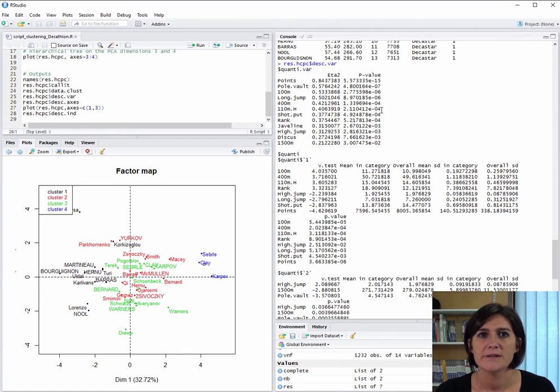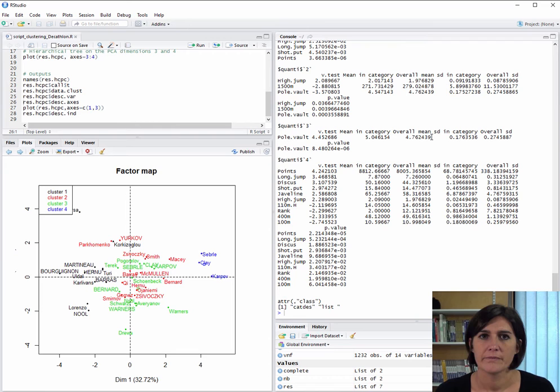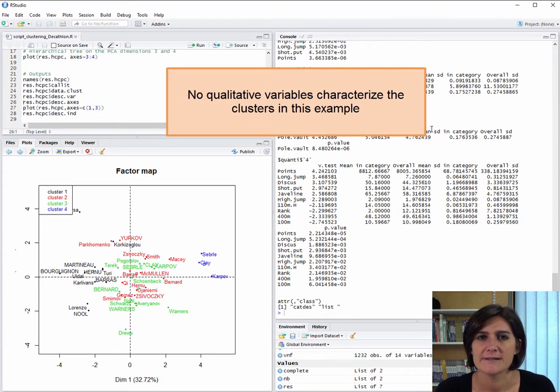And these are the individuals who have significantly less points than the others. Significantly because the test value is quite negative and less points because we can see that, on average, they got 7596 points, while the average across all athletes was 8500. Moving on, we then have a description of the second class, then the third, and then the fourth. In this example, the qualitative variable does not characterize the classes.